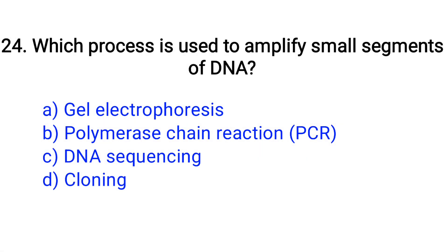Question number 24. Which process is used to amplify small segments of DNA? Option A: Gel electrophoresis, B: Polymerase chain reaction, C: DNA sequencing, D: Cloning. The right answer is Option B: Polymerase chain reaction.